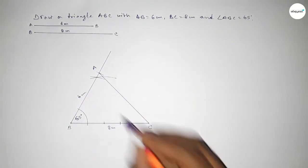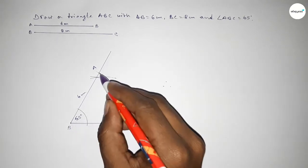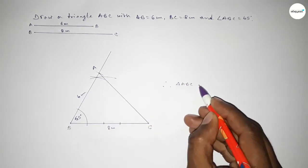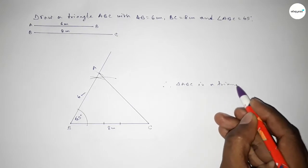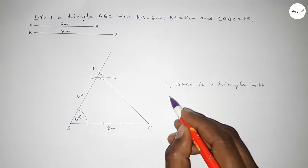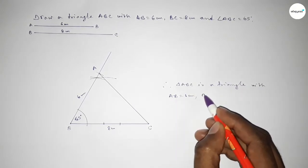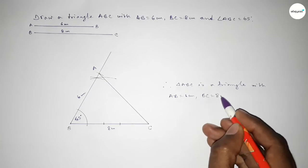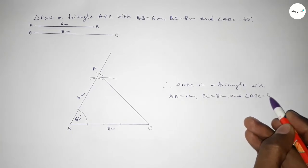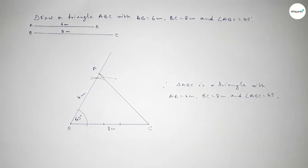Now joining A and C to get triangle ABC. This side is 8 centimeters and this side is 6 centimeters. So triangle ABC is a triangle with AB equal to 6 centimeters, BC equal to 8 centimeters, and angle ABC equal to 65 degrees. That's all — thanks for watching. If this video is helpful, then please like and subscribe.